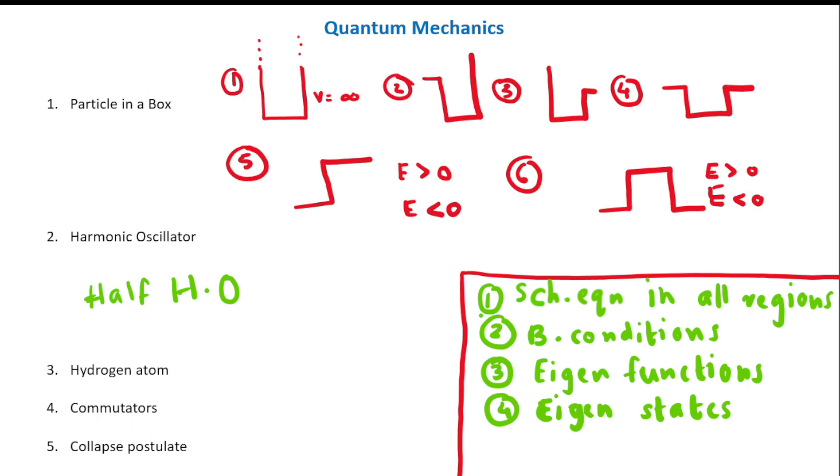In particular, for particle in a box, you have to see how to write Schrodinger equation in all regions. These are the possible types of questions: infinite potential box, finite potential here and infinite here, finite in both places, step potential, and potential barrier.